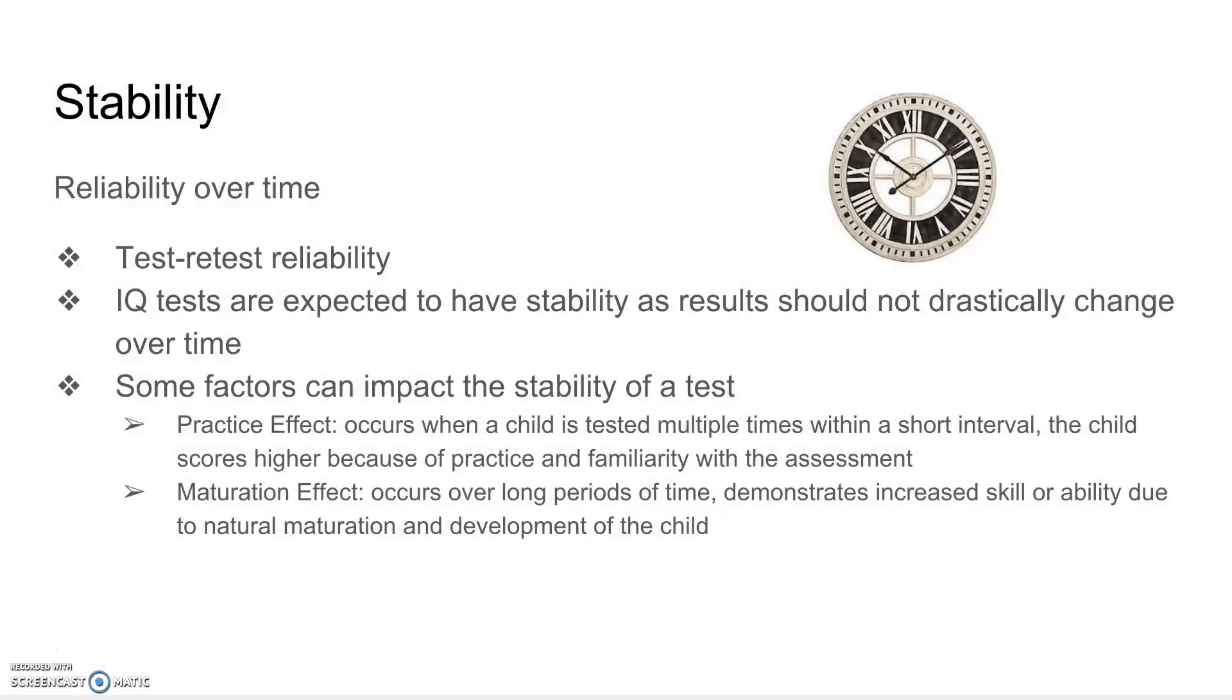And the final type of reliability is stability, which is reliability or consistency over time. This is determined by a test-retest procedure to compare results of the first administration of a test to a later administration of the test. An example of forms of tests that have high stability are IQ tests. They are expected to have results that stay fairly similar over multiple administrations of a test.